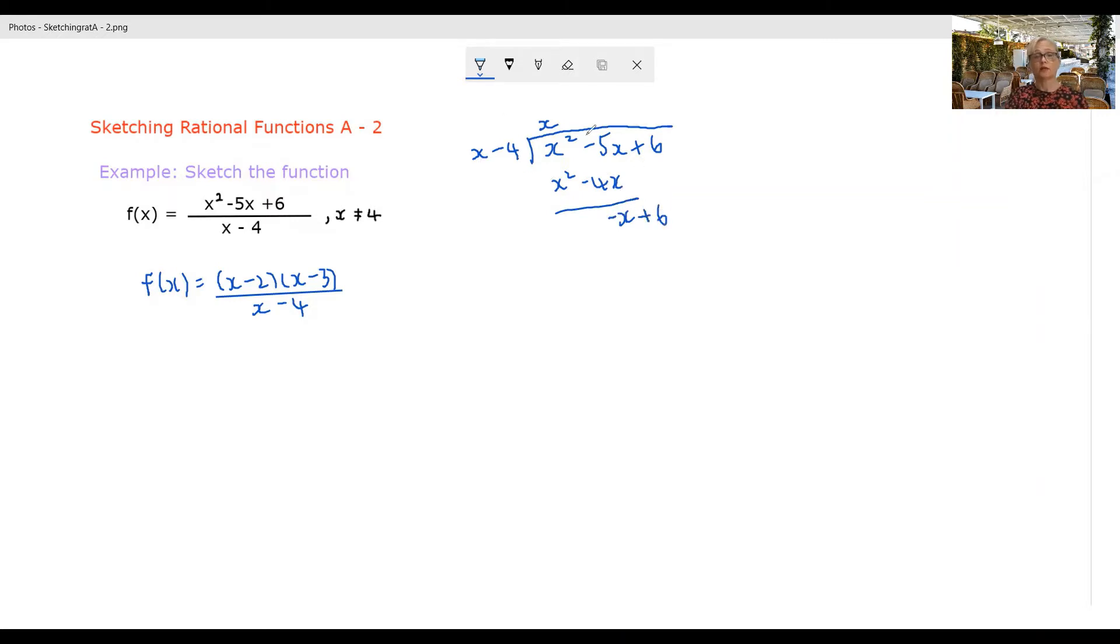And we're going to, again, do our leading term divided by leading term. We get minus 1. Multiply through again. So we get minus x plus 4. And then when we do our subtraction, we get 2.